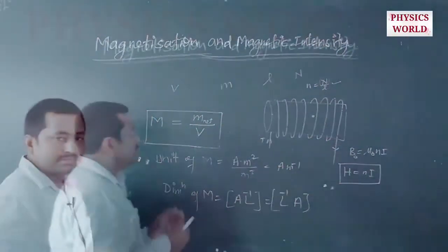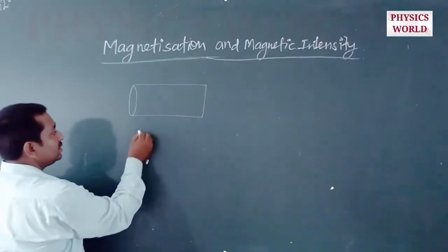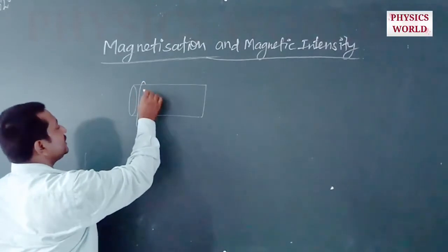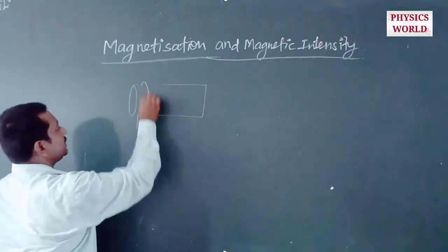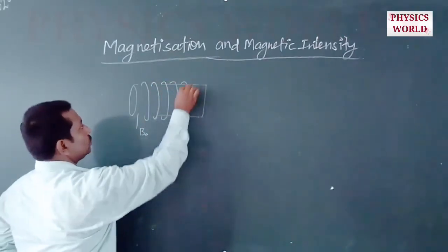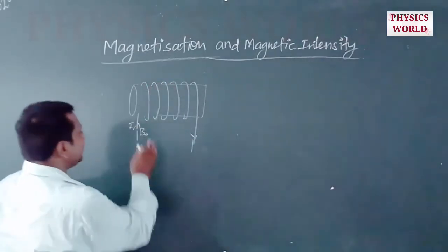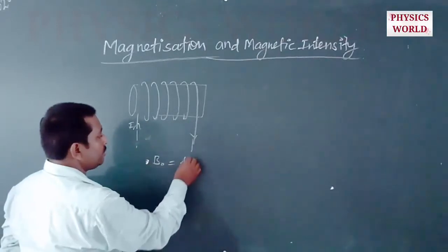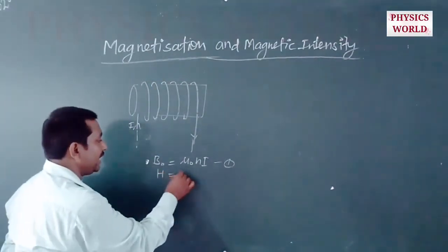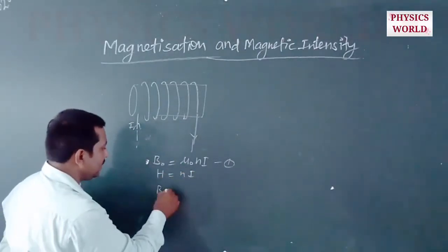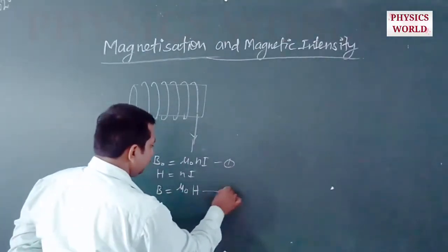Now let us discuss what happens when a magnetic substance is placed inside the solenoid. Suppose we have a solenoid with number density n, and the current flowing through it is I. The magnetic field at any point inside is dB = μ₀nI. The magnetic intensity at any point inside the solenoid is H = nI, so we can write B₀ = μ₀H. This is the second formula: B₀ = μ₀H.